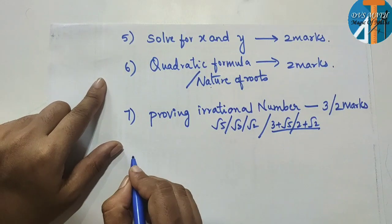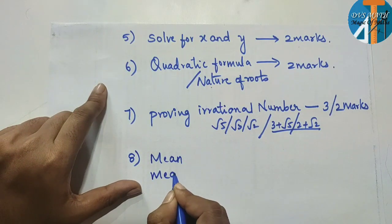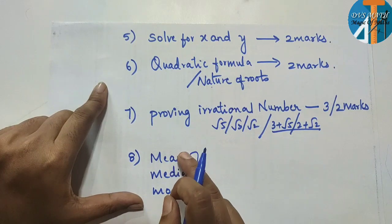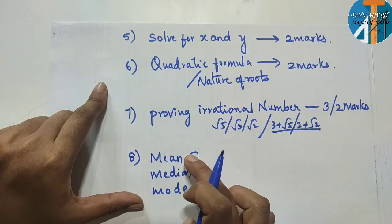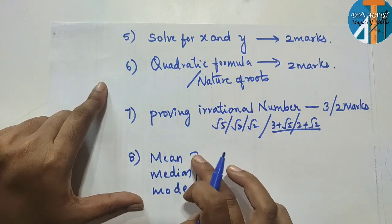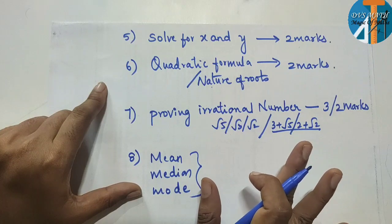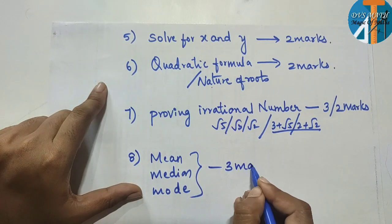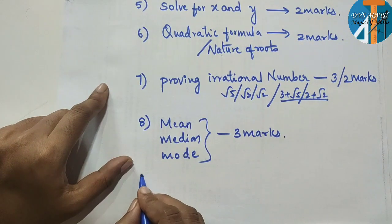Next is mean, median, mode. In this topic, one question will definitely come — either mean and median, or median and mode, or mean and mode as a choice. As I explained previously, solve it easily and you can get 3 marks.